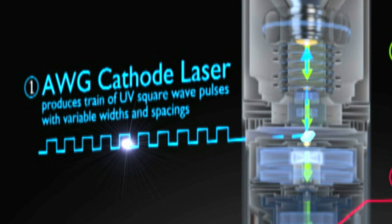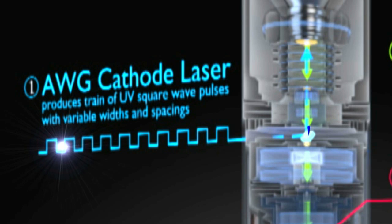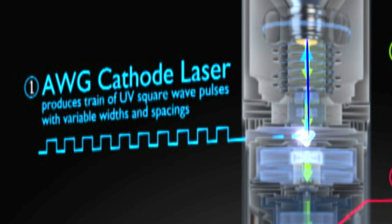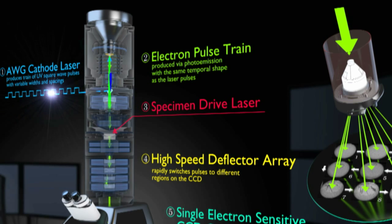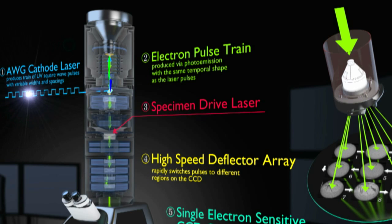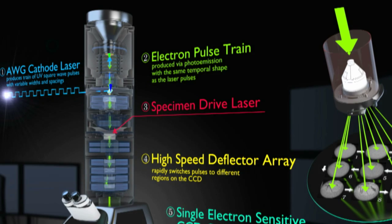Now we use a laser to make it generate electrons in a pulsed fashion. We send a pulse of ultraviolet light up to a photocathode in the gun of the microscope. When it hits the photocathode, it ejects electrons only for as long as those photons are hitting that photocathode. So the pulse duration of the electrons is exactly the pulse duration of the laser. That can be made quite short, and so we generate this intense pulse of electrons at the gun and send it down through the column just like a normal electron microscope.